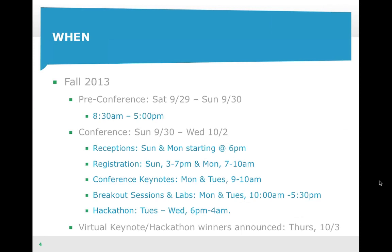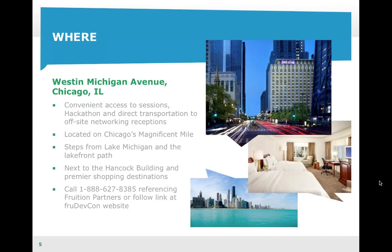There are two portions of the conference: the pre-conference and the conference, and those are sold separately. The pre-conference is Saturday the 29th through Sunday the 30th, starting at 8:30 and going until 5 p.m., with lunch on your own that day. The conference itself kicks off that Sunday evening with a reception at 6 p.m., and we have another reception on Monday as well.